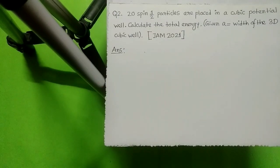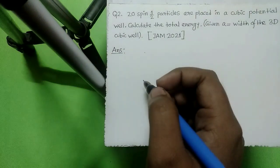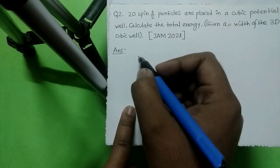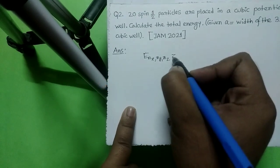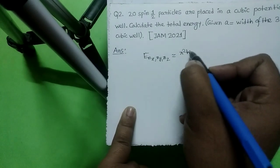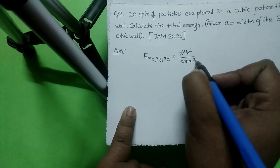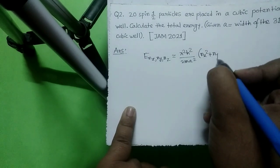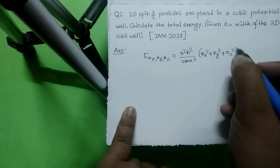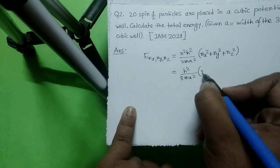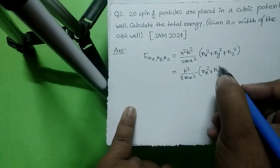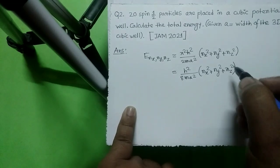Next question: 20 spin-half particles are placed in a cubic potential well. Calculate the total energy, given 'a' is the width of the 3D cubic well. The energy of a quantum particle in a cubic well is E(nx, ny, nz) = (π²ℏ²/2ma²)(nx² + ny² + nz²), which can also be written as (h²/8ma²)(nx² + ny² + nz²).